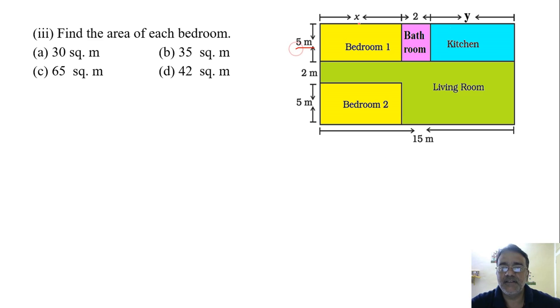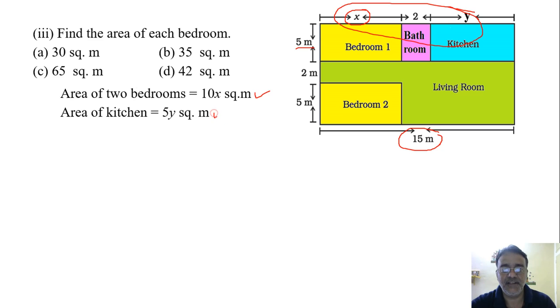Now we will move toward find the area of each bedroom. Here the variable is there. We can't find the area of bedroom directly. So for that what we have to do? We have to form the linear equation with the help of the given condition. The condition is given that the area of two bedrooms and kitchen together is 95 meter square. So that condition we can use it to form one equation.